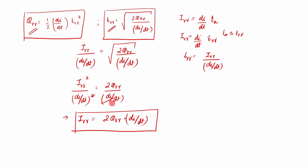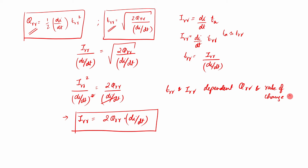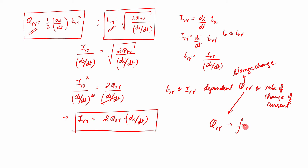If you look at these equations there is a very interesting concept. You can see that TRR and IRR — the reverse recovery time and reverse recovery current — are both dependent on QRR and the rate of change of current (di/dt). The rate of change of current here is the decrease in current. QRR is also called the storage charge or reverse recovery charge.